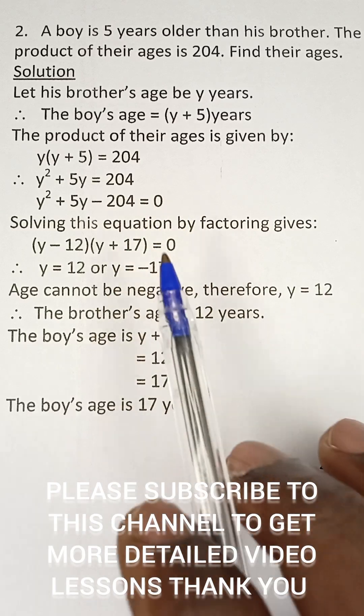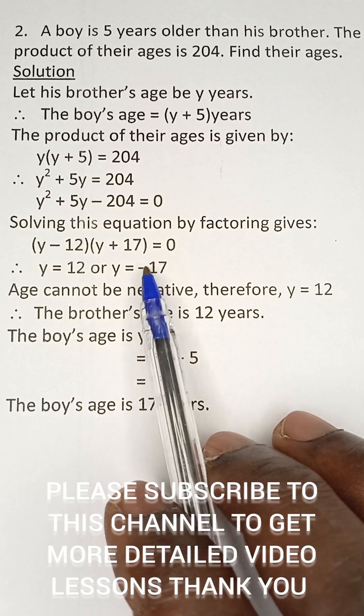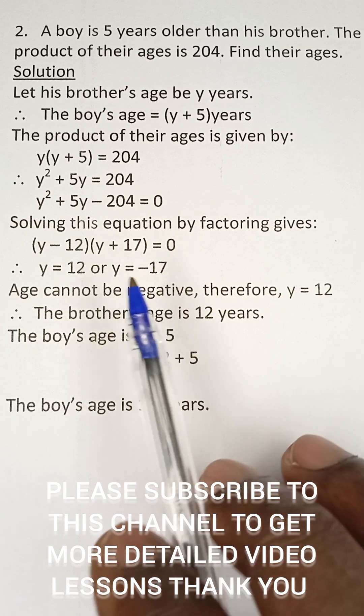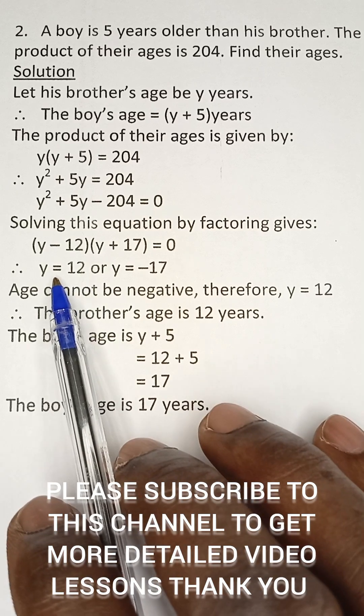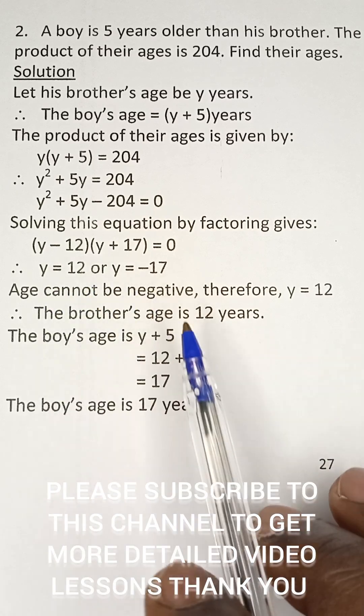But we know that age cannot be negative, so we are not going to take this answer. So our correct answer will be y is equal to 12. This is the brother's age.